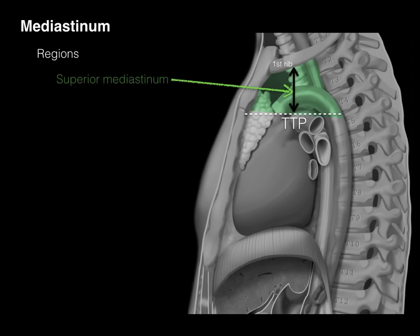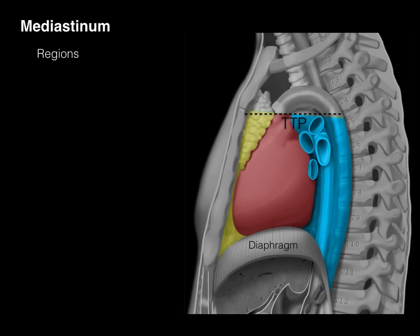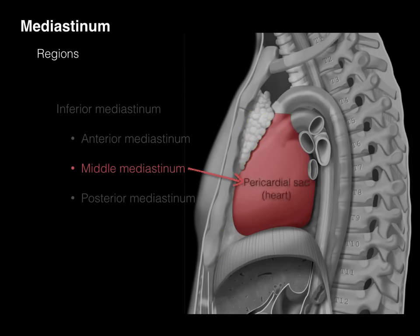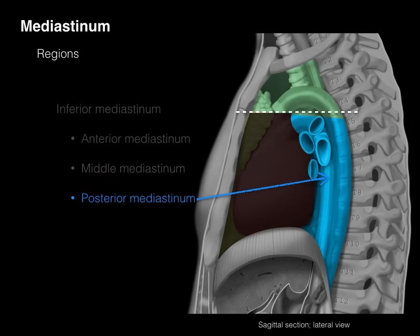Top to bottom, the mediastinum has the following regions: the superior mediastinum between the first rib and the transverse thoracic plane, and the inferior mediastinum between the transverse thoracic plane and the diaphragm. The inferior mediastinum has three sub-regions: the anterior mediastinum in front of the heart, filled with the thymus; the middle mediastinum filled with the pericardial sac containing the heart; and the posterior mediastinum, everything behind the heart.